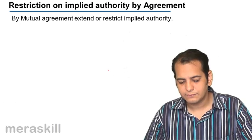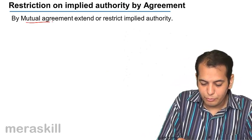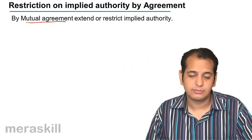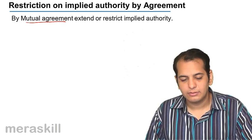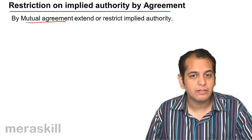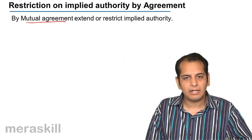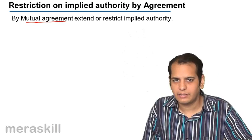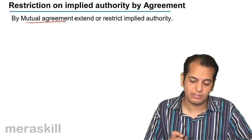Restrictions on implied authority by agreement: the partners make a mutual agreement to restrict the implied authority. They may also make a mutual agreement to extend it — like we saw in the last slide, partners are extending the implied authority, overruling the act by mutual agreement.